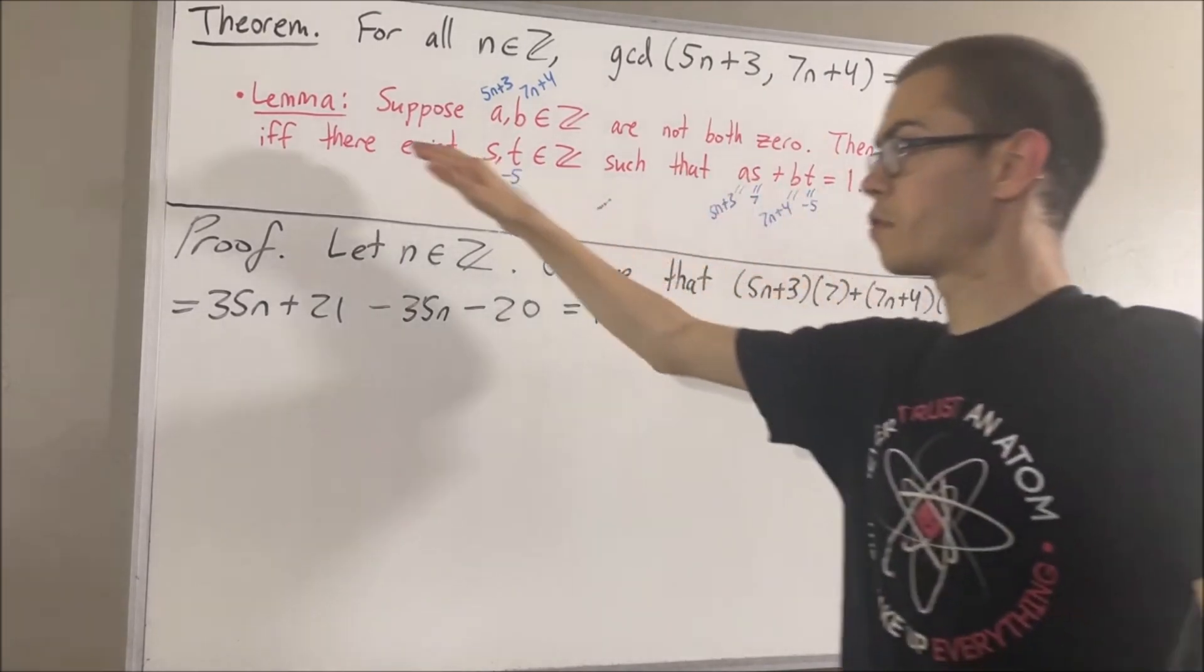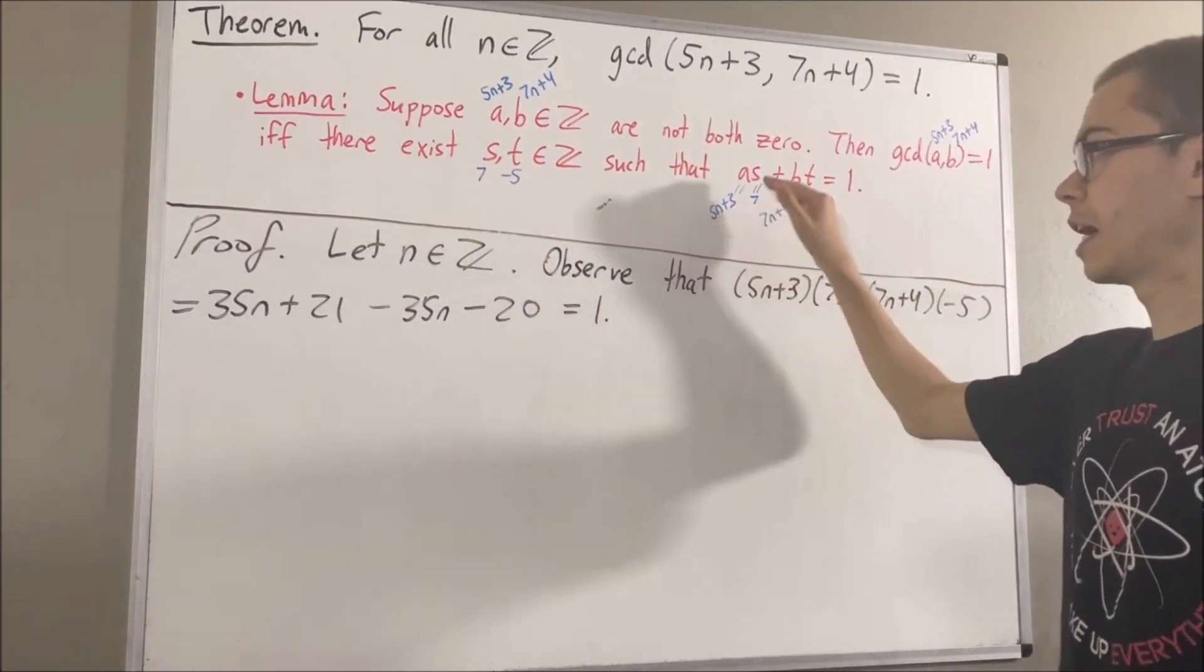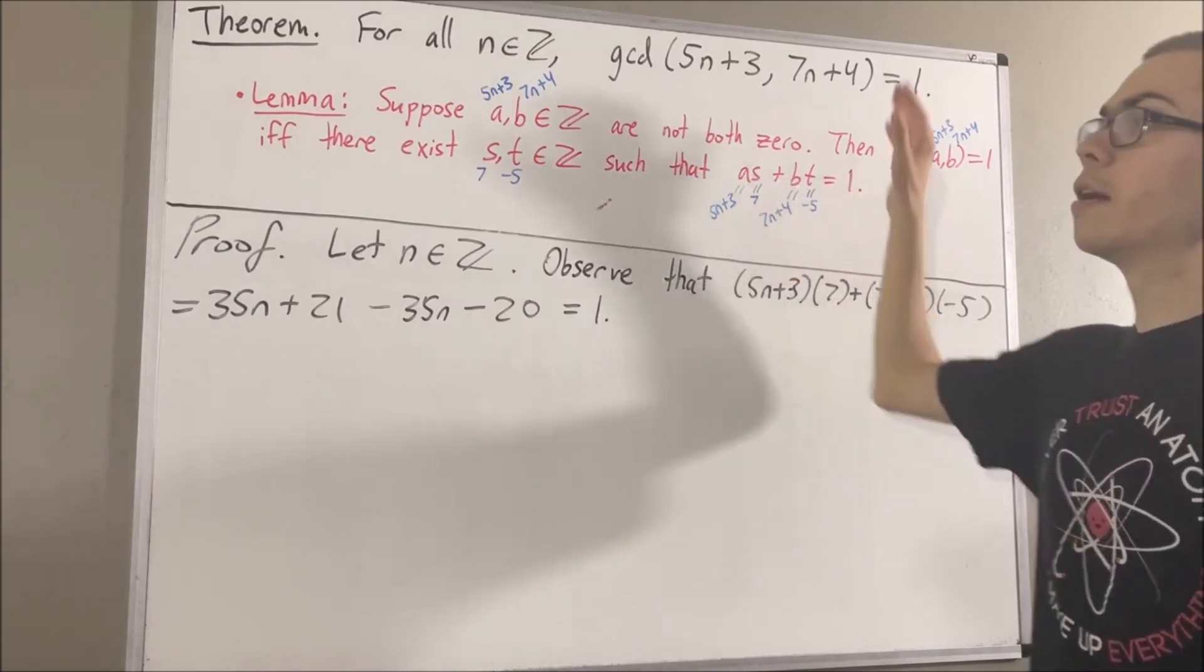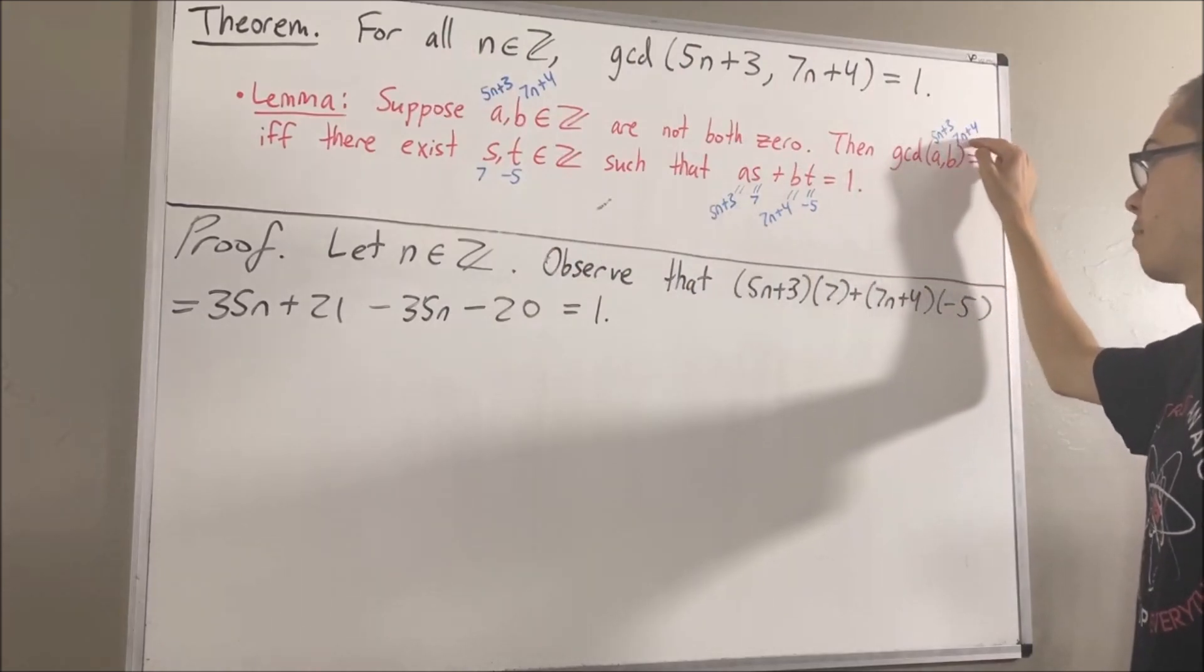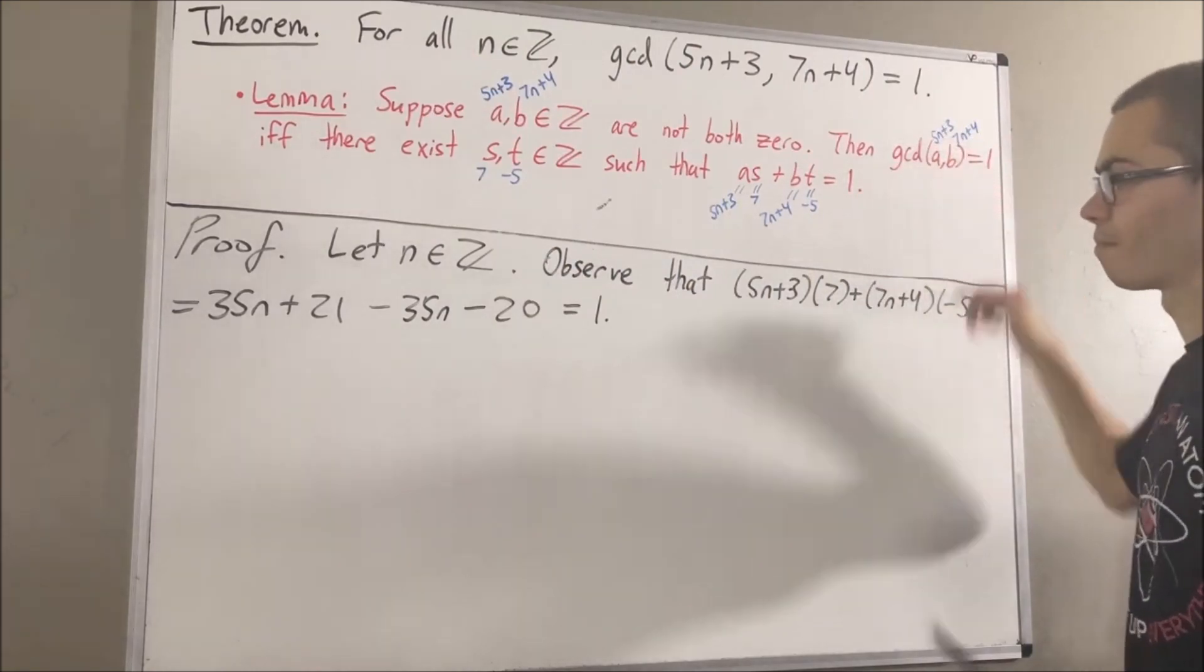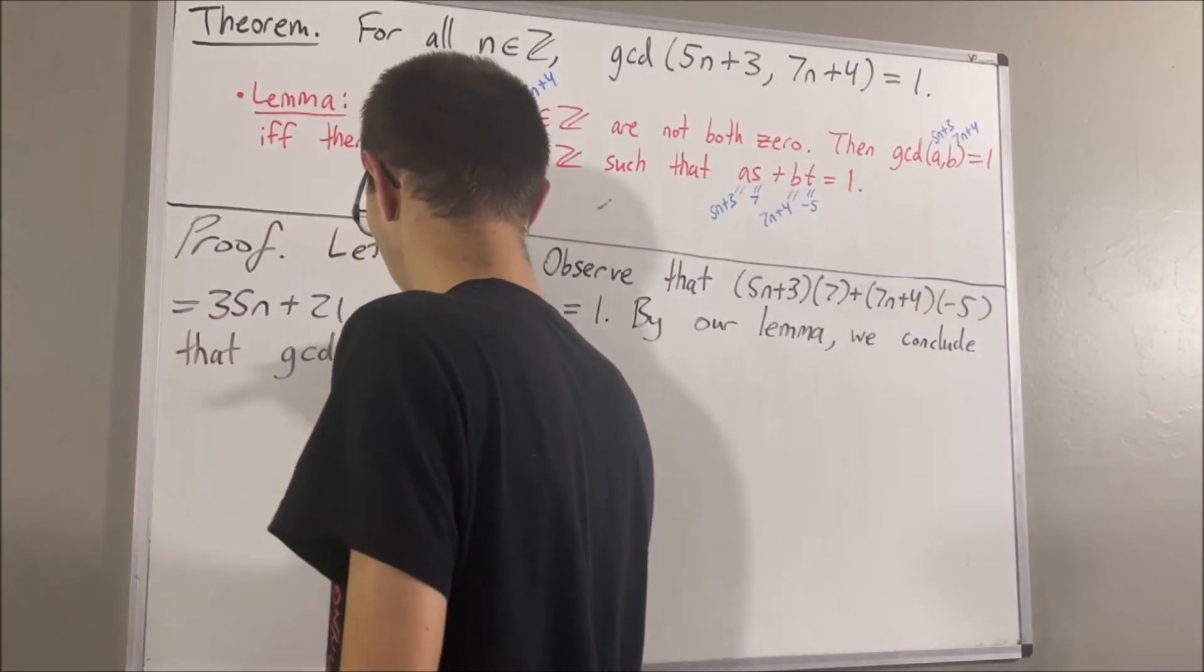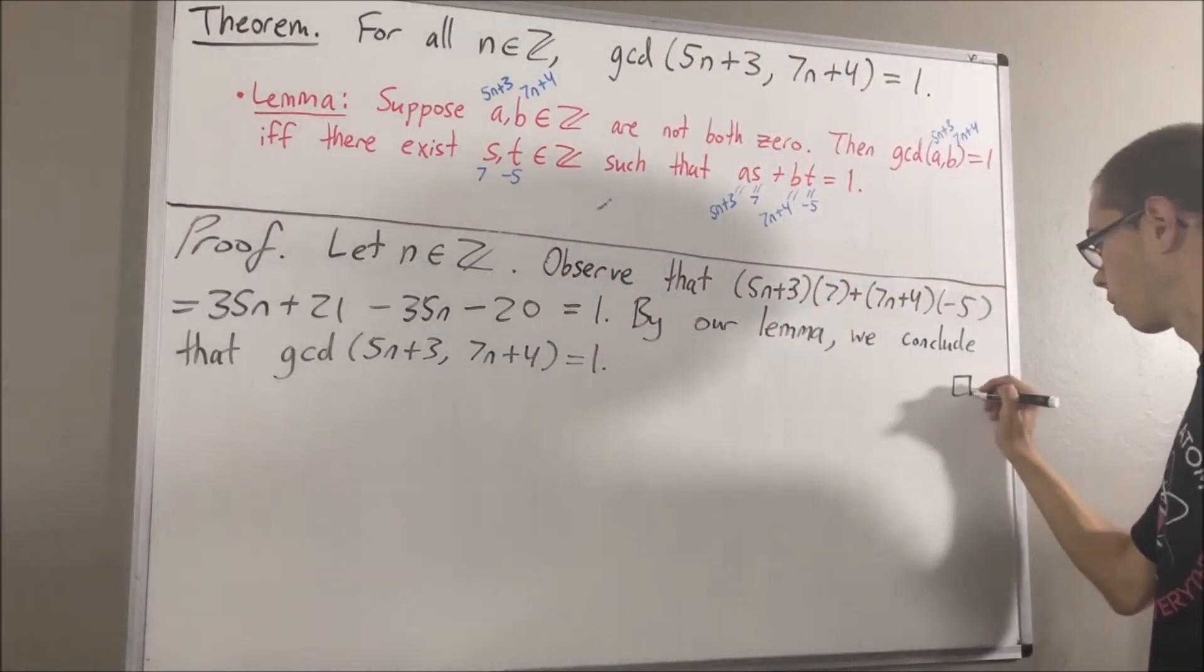So, we have shown that there exist integers s and t, such that 5n plus 3 times s plus 7n plus 4 times t is equal to 1. By our lemma, that tells us that the greatest common divisor of 5n plus 3 and 7n plus 4 must be equal to 1. And so, this completes the proof.